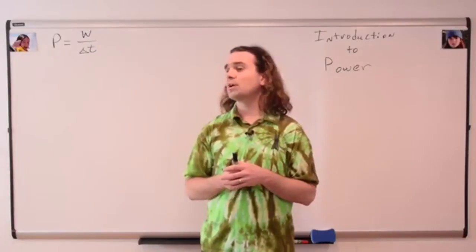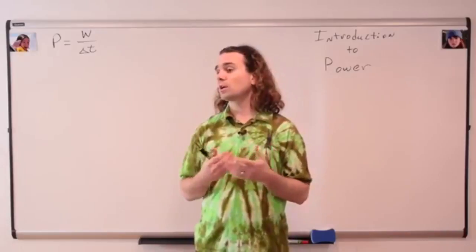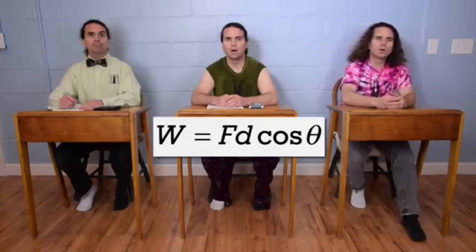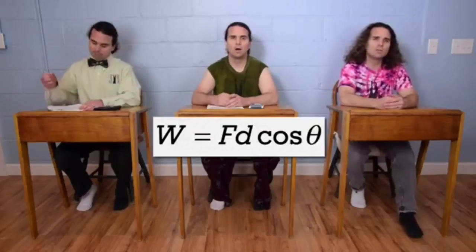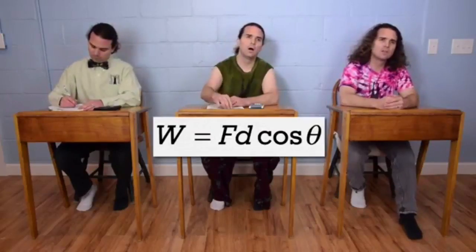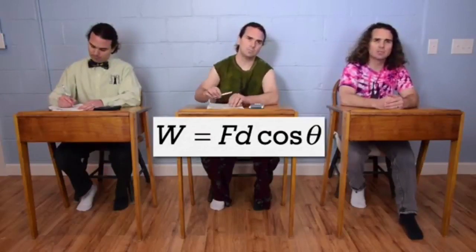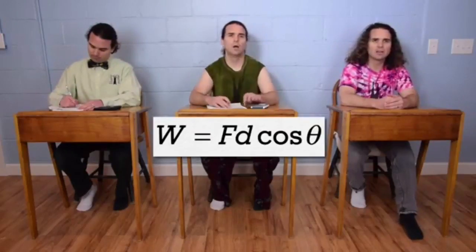Bo, what is the equation for work? A squared plus B squared equals C squared. No! Work equals force times displacement times cosine theta.